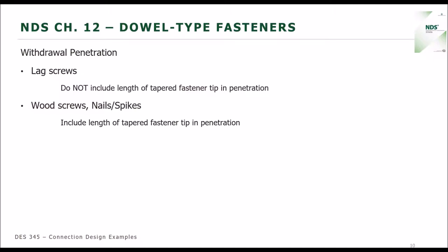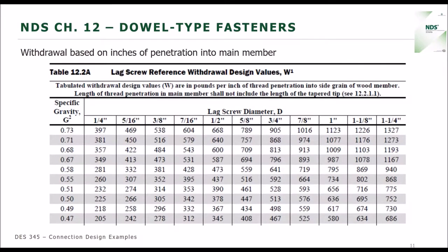When you go into Chapter 12, Table 12-2A, for example, this is a tabulated table of lag screw reference withdrawal design values. The equation was dependent upon specific gravity and the diameter of the fastener. For lag screws, underneath the table heading, it says the length shall not include the length of the tapered tip. We have lag screw diameters from a quarter inch on up to an inch and a quarter in diameter.